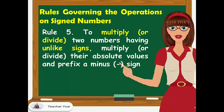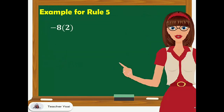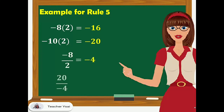Rule number 5: to multiply or divide two numbers having unlike signs, multiply or divide their absolute values and prefix a minus sign. For example, negative 8 times 2 gives negative 16. Negative 10 times 2 is negative 20. Negative 8 divided by 2 is negative 4. 20 divided by negative 4 is negative 5.